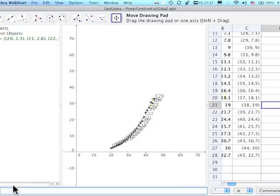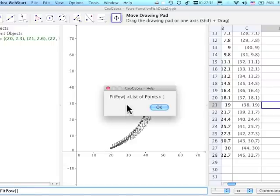Now I'm going to search through my commands and find a fit power function. Going inside the brackets and looking at the syntax, it's simply looking for a list of points. So I'm going to say OK.